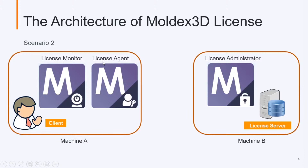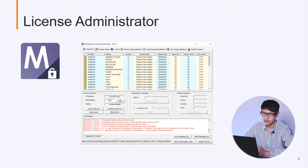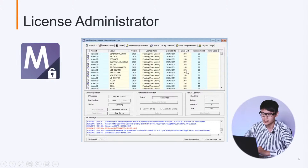For the license administrator, we must make sure it works properly — meaning there is no error code. For example, if you see an error code, the reason may be that the license is expired. The normal state should show no error code, license not expired (for example, 258 days left), status launched, and administrator operation connected. If it's stopped, please click Launch to launch the license server.